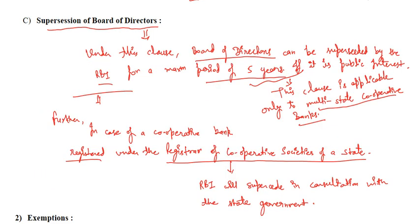Now coming to the third clause, that is supersession of board of directors. Let's say there is a bank in moratorium with a board of directors. Under this clause, the board of directors can be superseded by the RBI for a maximum period of five years if it is in the public interest. This is a must condition. This clause is applicable only to multi-state cooperative banks.